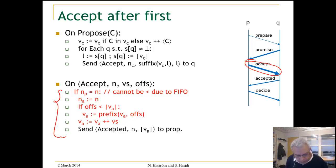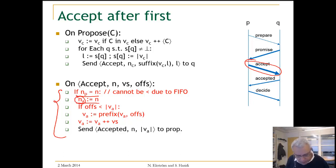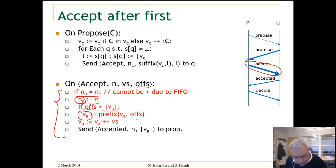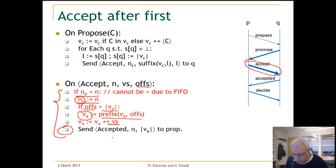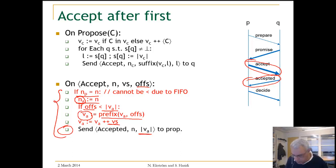After the first accept, the acceptor behaves as follows: if the round number of the promise equals N, it updates the round number of the accepted sequence. If the offset is less than the length of the currently accepted sequence, it updates its accepted sequence by taking the prefix of the current accepted sequence and appending the new commands. Then it sends to the proposer an accept message with the length of the sequence it has accepted.